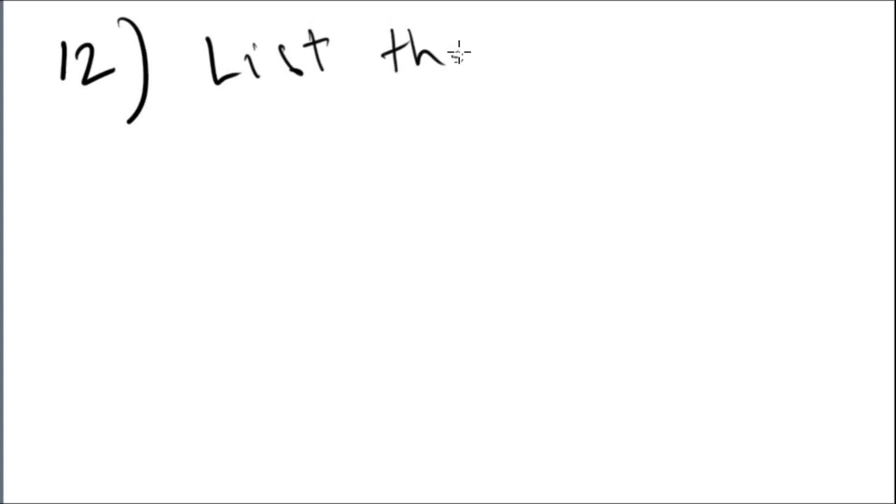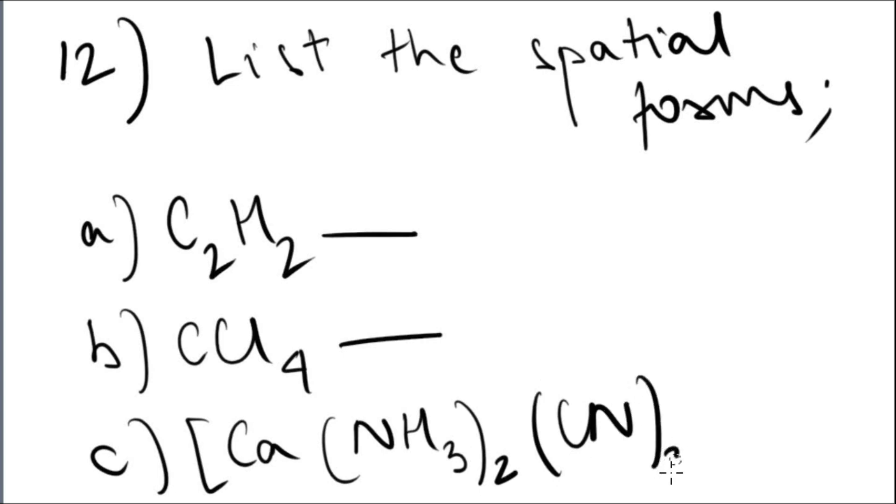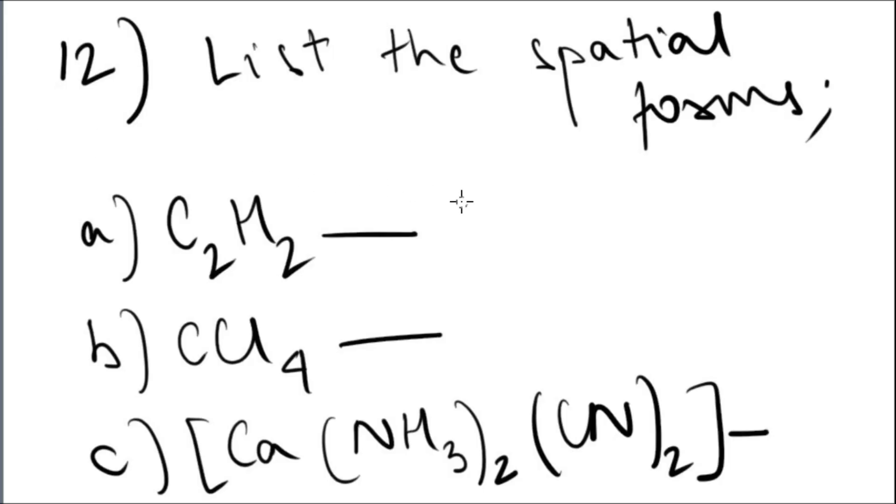Moving on to question 12: you have to list the spatial forms of the following coordination compounds. So look at the number of ligands. The first one has two ligands, the second and third ones have four ligands. Two means linear. The second one has four of the same ligands, so it's tetrahedral. The third one has two different ligands, so it is square planar.